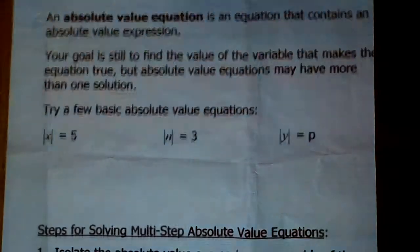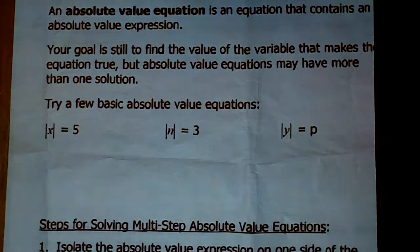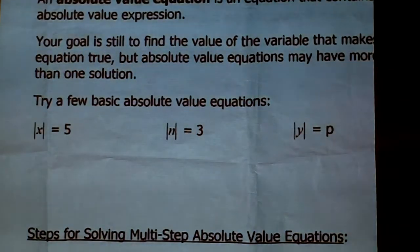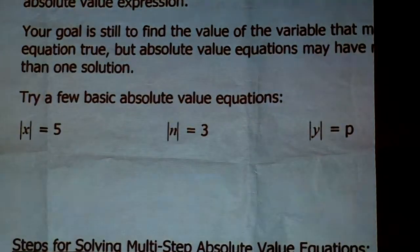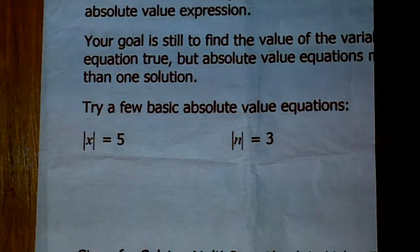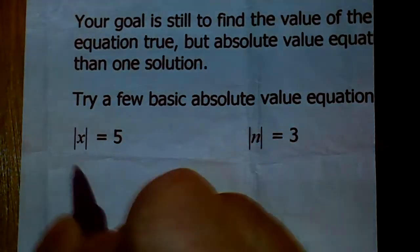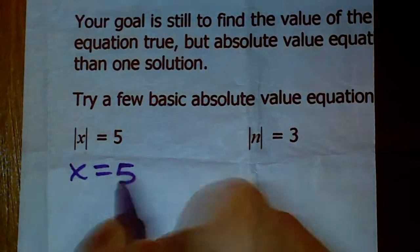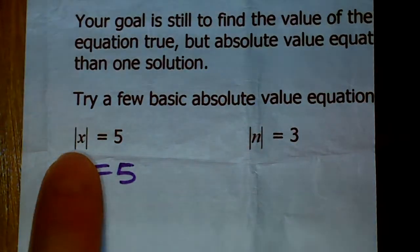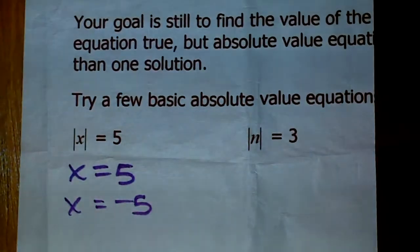Think about it this way. Here are a few basics — these are all absolute value equations because they have an expression inside the absolute value symbols. For this first one, I'm asking: what values of X make |X| = 5? The absolute value of 5 is 5, so X can be 5. But the absolute value of negative 5 is also 5, so X can also be negative 5. Both values make this equation true.